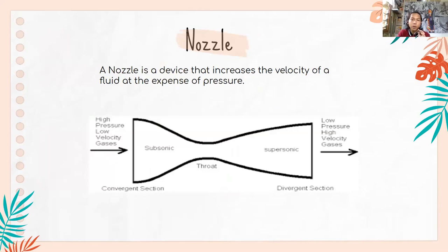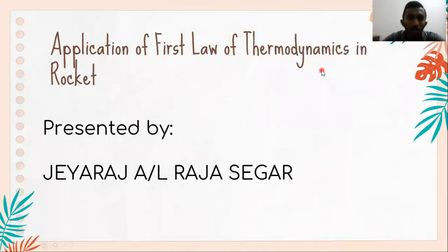Lastly is the nozzle. A nozzle is a device that increases the velocity of a fluid at the expense of pressure. A rocket nozzle is shaped converging-diverging. The converging section accelerates the fluid to subsonic flow, while the diverging section, or expansion area, further accelerates the combustion gases to supersonic flow, so that the rocket can produce the high-velocity thrust needed to launch. That's all from me, I will pass to the second presenter.